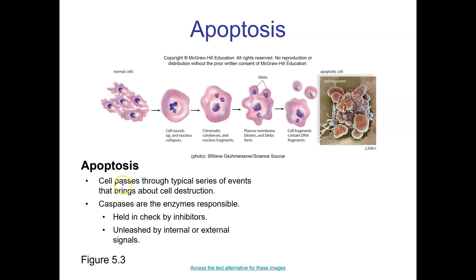There are a series of events that lead to apoptosis. Specifically, we have enzymes that initiate the apoptosis process. Apoptosis is held in check by different proteins called inhibitors, and when they are stimulated, they will be secreted and activate the apoptosis that we see.